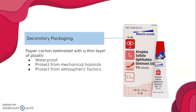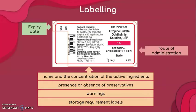Collapsible paper cartons laminated with a thin layer of plastic are usually used as secondary packaging. The thin layer of plastic provides a waterproof property to the secondary packaging to a certain extent. The important labels that should be on the secondary packaging include the expiry date, route of administration, warnings, storage requirement labels, presence or absence of preservatives, as well as the name and concentration of the active ingredients.